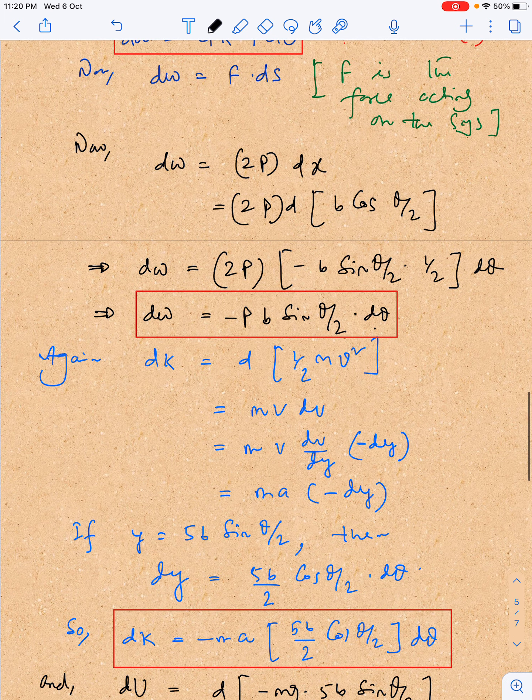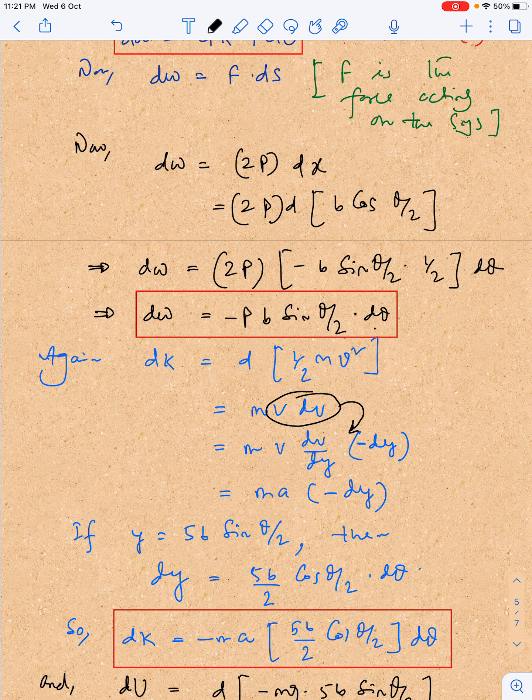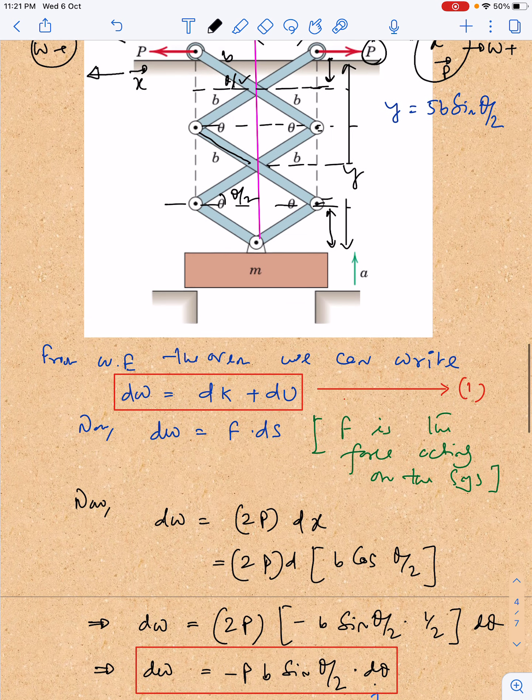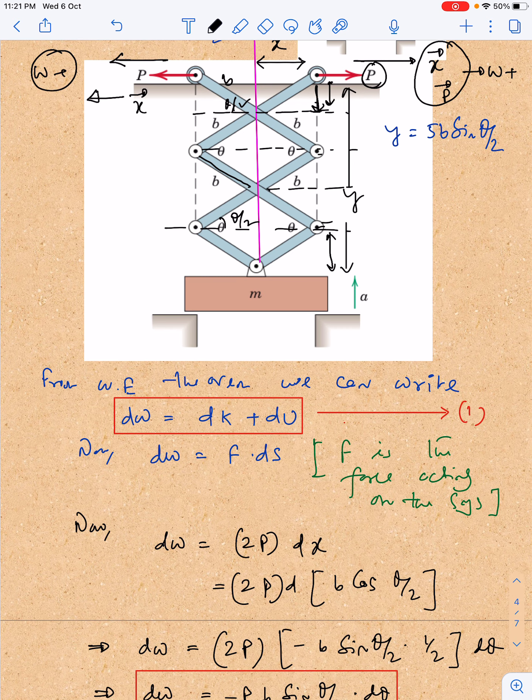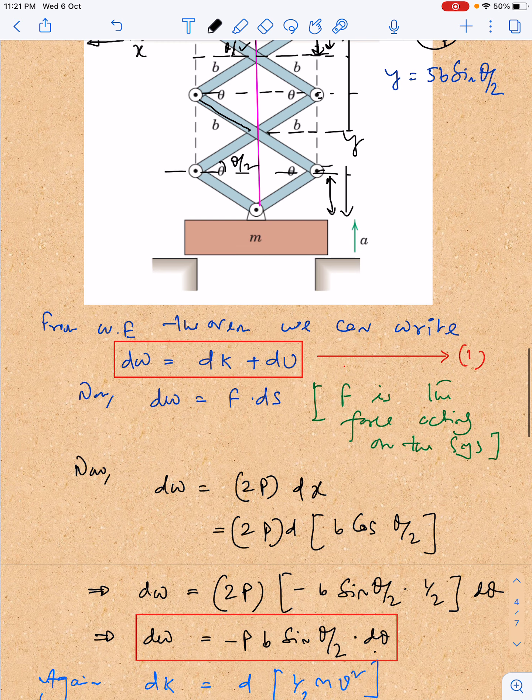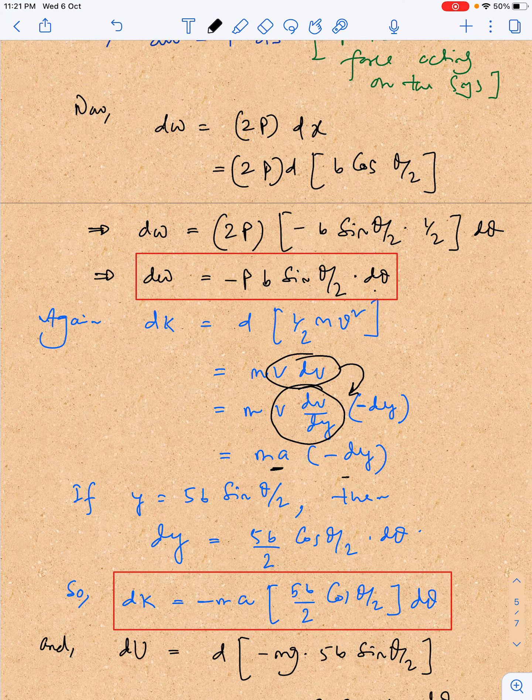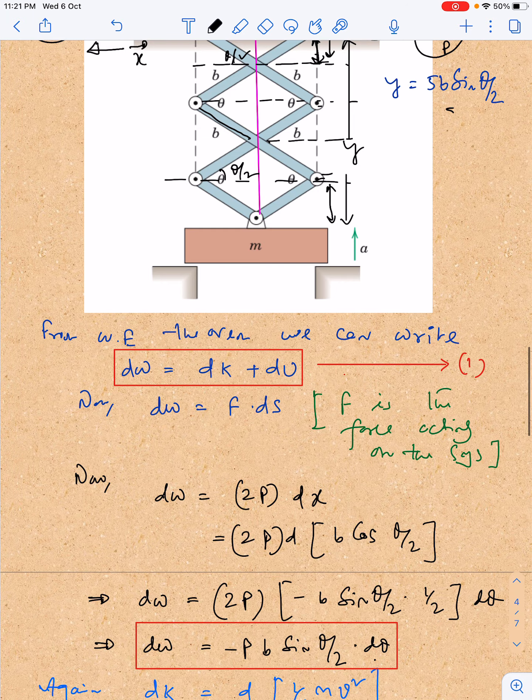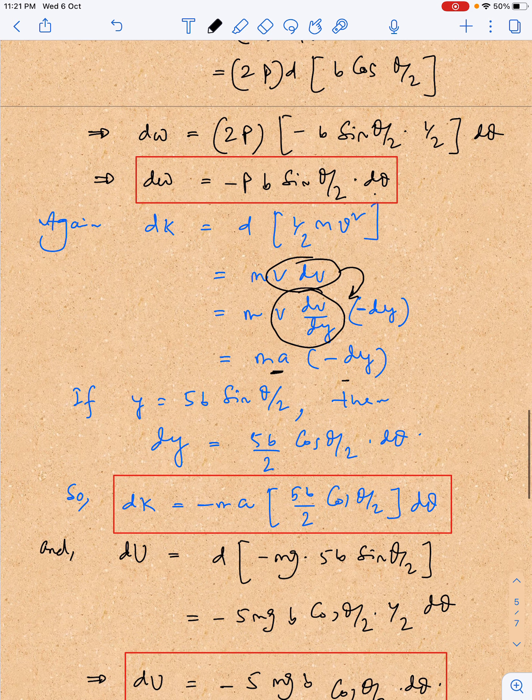Next, if I see what is the change in kinetic energy, dk is equal to d of half m into v squared, so it becomes mv dv. This v dv term I am changing in this pattern: I am writing v dv by dy into minus dy. There is a purpose of writing that minus dy because y is decreasing—as it moves ahead, this value will decrease. So v dv by dy is the acceleration, so I have kept ma minus dy. Now y equals 5b sin theta by 2, which I have already calculated. So differentiating, dy equals 5b by 2 cos theta by 2 d theta. Now dk equals minus ma times dy.